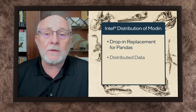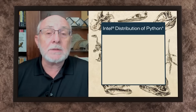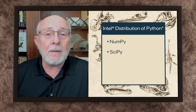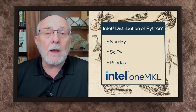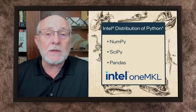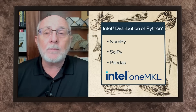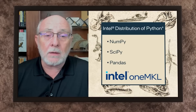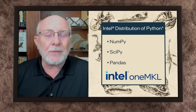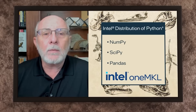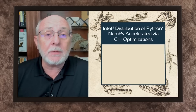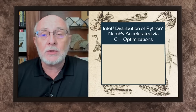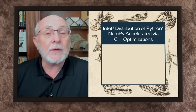The next major category is Intel-optimized Python. Within that we have NumPy, SciPy, and Pandas, which are all powered by OneAPI. A large chunk of the performance gains for these libraries come from the use of Intel oneMKL — the Math Kernel Library — under the hood. NumPy is also accelerated via C++ optimizations for cache utilization and so forth.